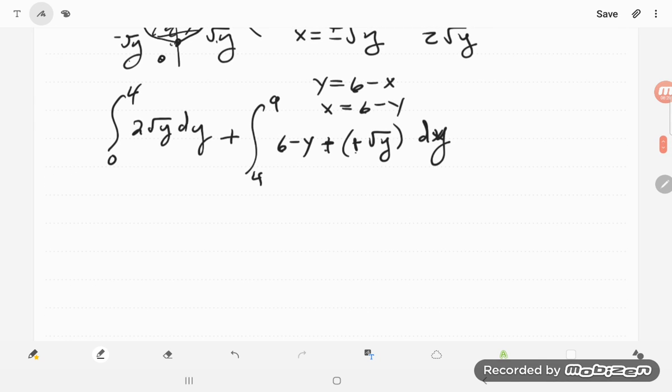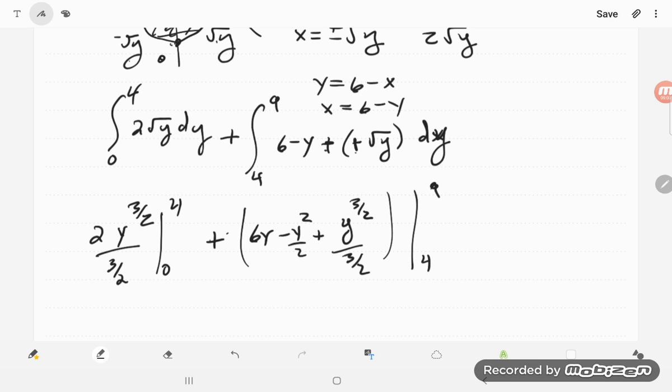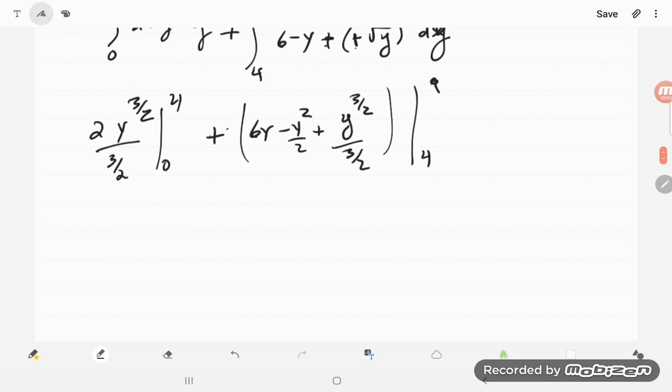So we do each of those separately. Square root of y to the 1 half, so I get 2 times y to the 3 halves divided by 3 halves from 0 to 4, plus we have a 6y and a minus y squared over 2 and a plus y to the 3 halves over 3 halves, and that whole thing is from 4 to 9.